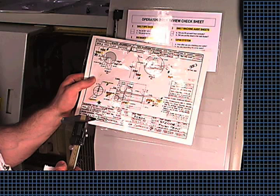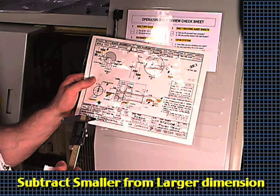The amount of offset adjustment required is found by comparing the measured dimension to the nominal dimension on the print. The smaller of these two dimensions is subtracted from the larger to calculate the adjustment amount.